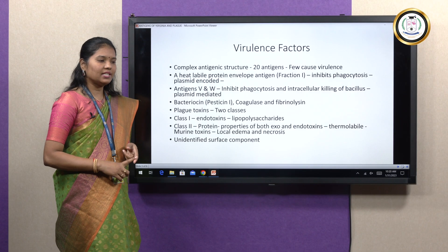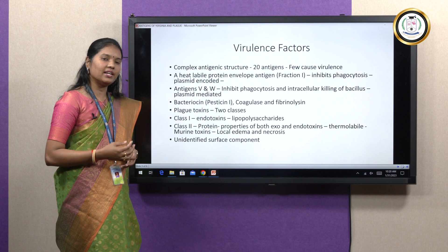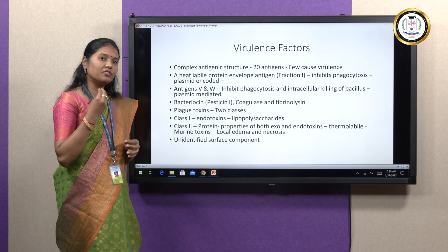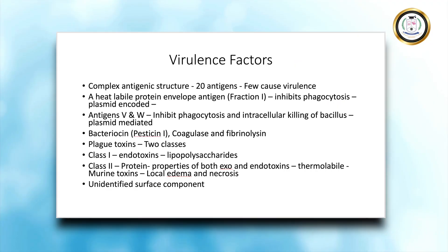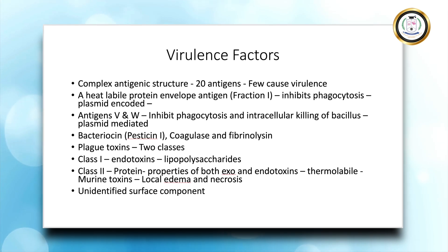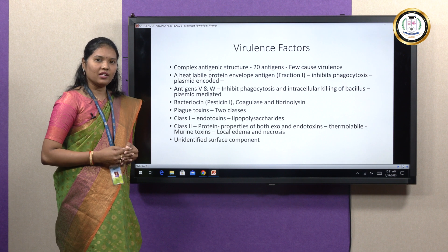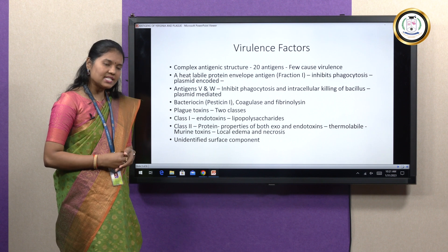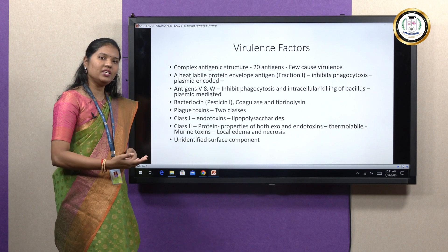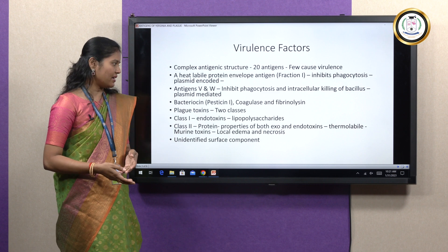Talking about the toxins of plague, they are categorized into two classes. Class 1 toxins are endotoxins — lipopolysaccharides highly similar to those of the toxins of enteric bacilli. Class 2 toxins are proteins that have the properties of both exotoxins and endotoxins. They are thermolabile, meaning they cannot withstand heat, and they are called murine toxins because they have a strong affinity towards the cells of mice as well as rats.